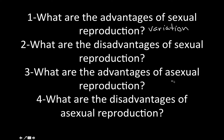The advantages of asexual reproduction include contributing a lot of the same genes to the gene pool and making it easy to find a match. The disadvantage is that if a climate change or other event wipes out part of the population and that portion can't survive, the whole population would be wiped out because everything is genetically identical. There are definitely advantages and disadvantages to both sexual and asexual reproduction.